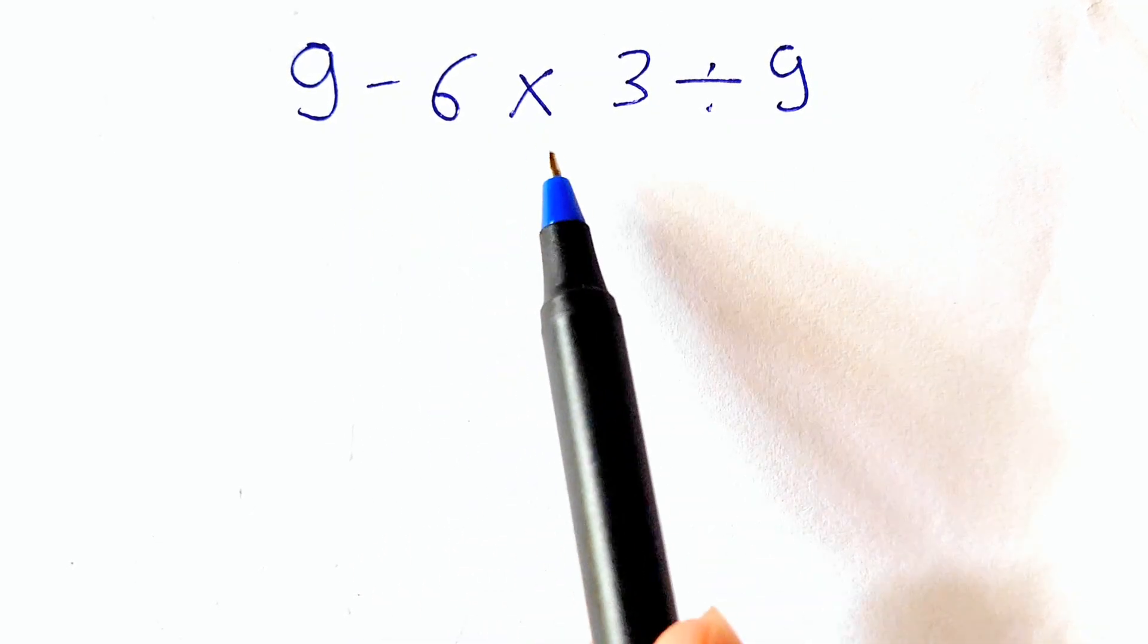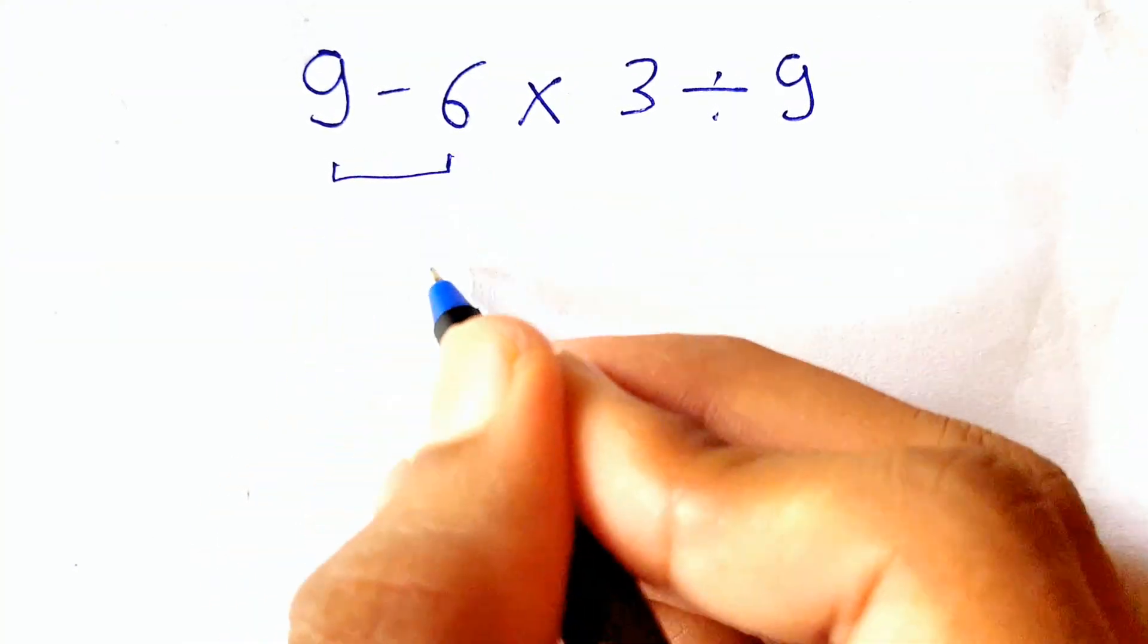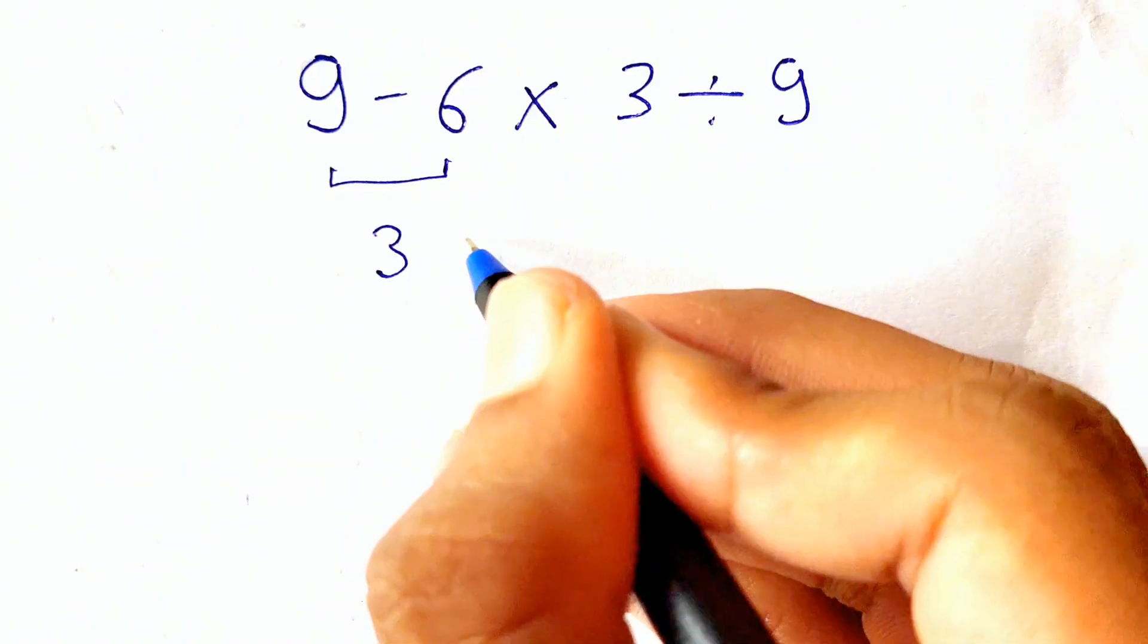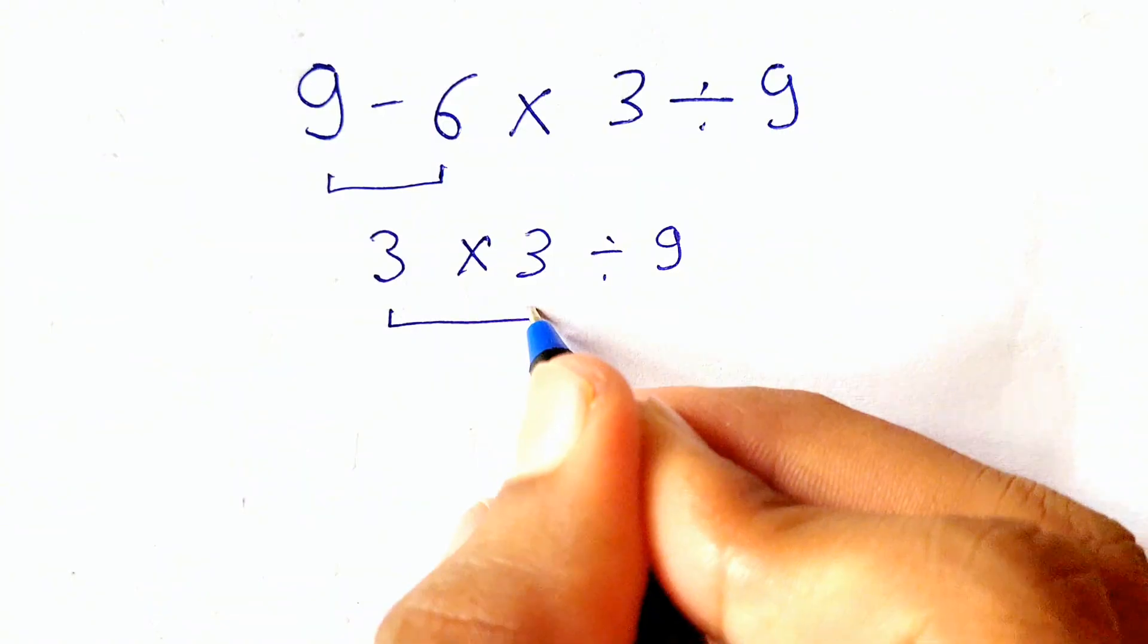Welcome back guys. 9 minus 6 times 3 divided by 9. Most people will solve 9 minus 6, that gives us 3. Then we'll write the remaining expression. Then we'll solve 3 times 3, that gives us